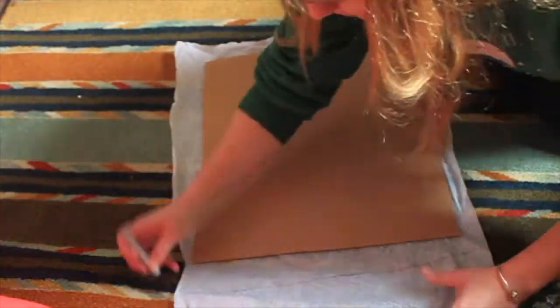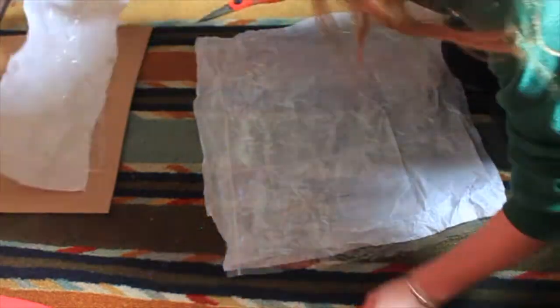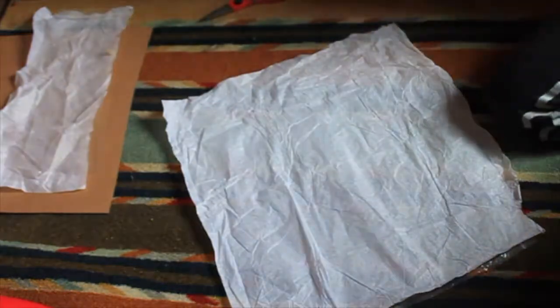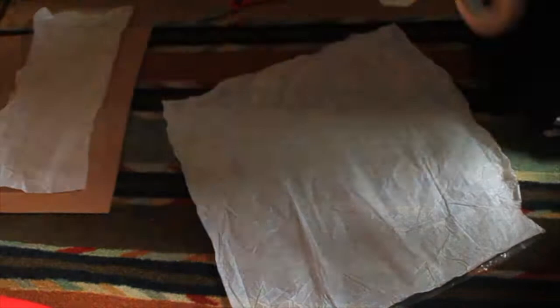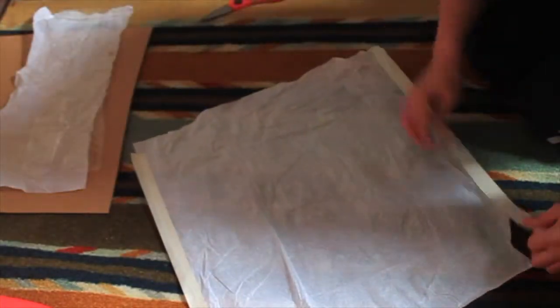Next you're going to want to grab that piece that you cut out for the stage and make sure that your fabric or paper, whatever you're using for your transparent stage, is the same size as the opening that you made for the stage in your box.